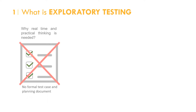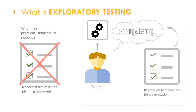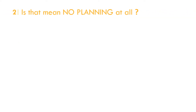This is performed without any formal test cases and test planning documents. Here the tester identifies the functionality by exploring and learning the application, which essentially helps them to design functional and regression test cases required for future execution. Exploratory testing is all about analyzing and finding potential risk rather than monitoring known risk like we do in scripted or specification-based testing.